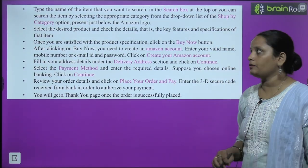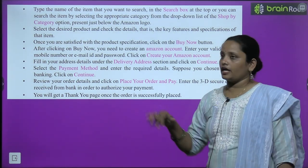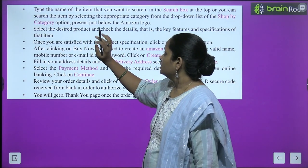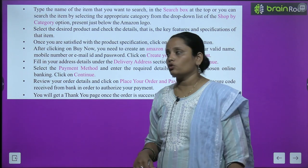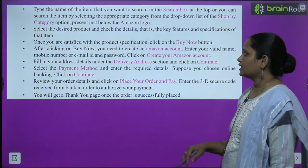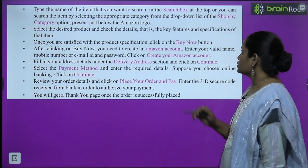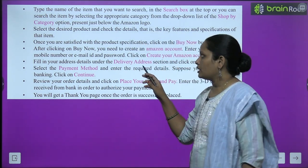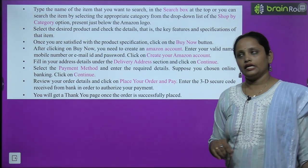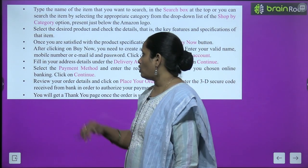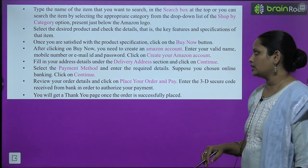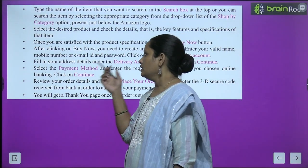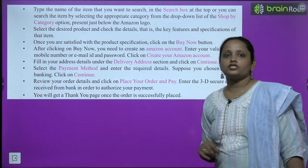To use Amazon, first go to the official website amazon.in and log in. Type the item name in the search box, or go to the Shop by Category option below the Amazon logo. Select the product you want, check the details, key features and specifications, and when satisfied click on the Buy Now option. You will need to create an Amazon account by entering your name, mobile number or email ID, and creating a password.